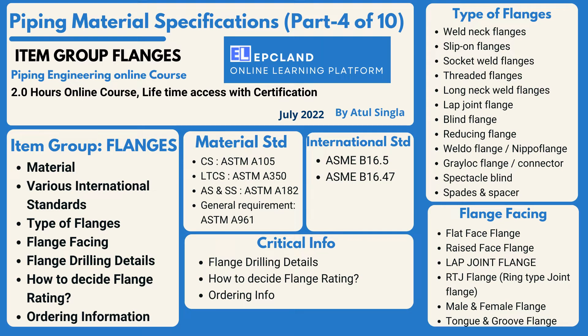Piping material specification, part 4 of 10. Let us see what we are going to cover in this section. In this section we are going to cover the item group: flanges.